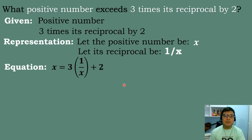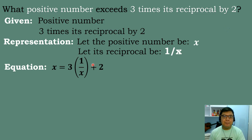Let's form an equation. The positive number x equals 3 times its reciprocal plus 2, since it exceeds by 2. So the equation is: x equals 3 times (1 over x) plus 2, which gives x equals 3/x plus 2.